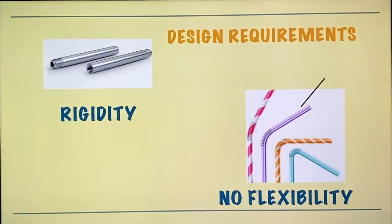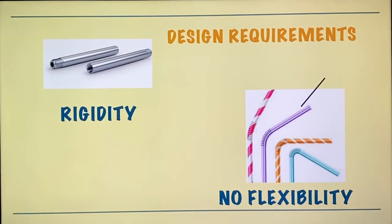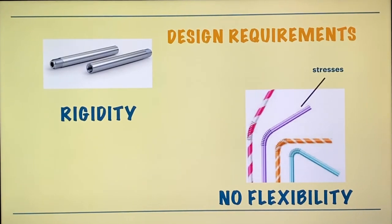There are certain design requirements we need to fulfill before designing our assembly. Our major connector must be rigid. Why must it be rigid? Because rigidity will help in uniform distribution of occlusal load, and it will keep our assembly without distortion. If it is flexible — you can see these rods are flexible — if our assembly is also flexible like this, it will lead to undue stresses, which we don't want.